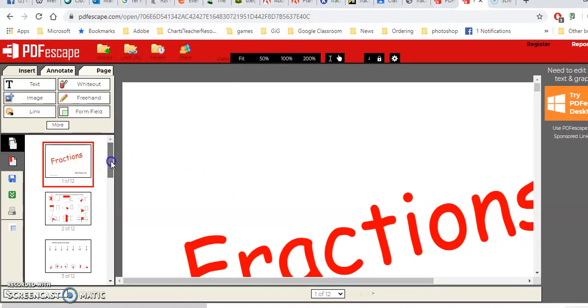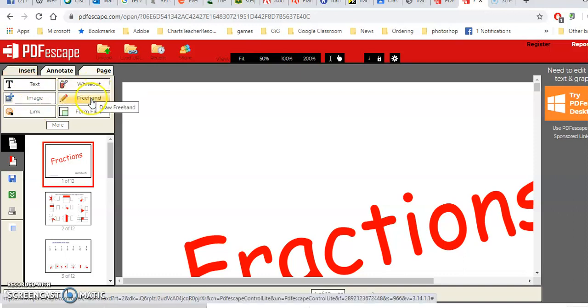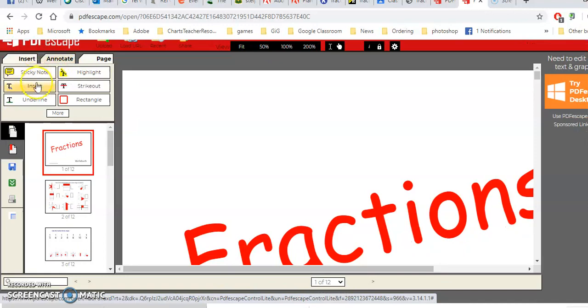And I can see over here are all the pages to this PDF. And I have a lot of different things that I can do. First off along the top I can insert items like text and images and links and white out things and draw freehand like sign a form and create form fields if I want to actually make a fillable form. I can annotate with sticky notes, underlines, rectangles and I can highlight and I can strike out.